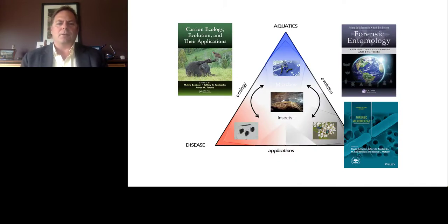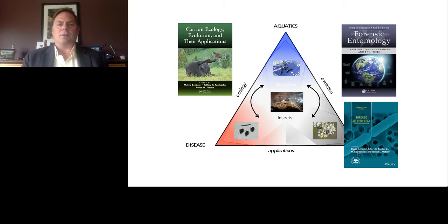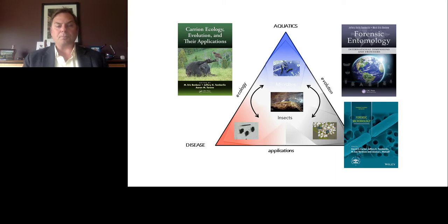The research in my lab centers on how insects and microbes interact in a triangulate fashion within aquatics, disease, and carrion systems. We address questions related to the ecology and evolution of these relationships and how they can be applied. I was originally trained in aquatic entomology, but did a postdoc with someone who did forensic entomology, and that got me interested in basic questions of what happens when something dies and what organisms are involved with that death, and how we can use that information in forensics.